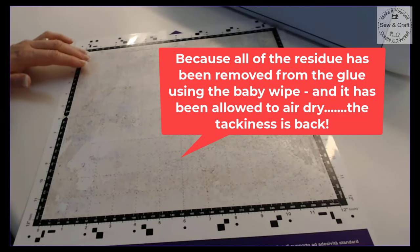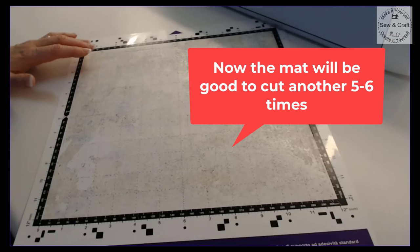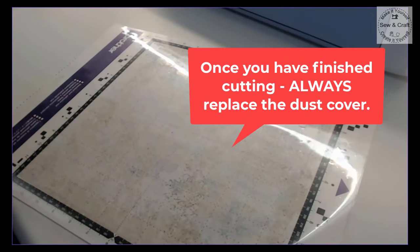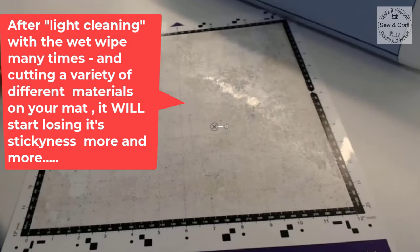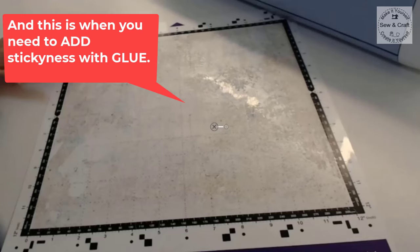Because all of the residue has been removed from the glue using that baby wipe and it has been allowed to air dry, the tackiness will be back. The mat will be good to cut for another five or six times. Once you have finished cutting always replace the dust cover before you store your mat. After the light cleaning with the wet wipe many times and cutting a variety of different materials on your mat it will start to lose its stickiness more and more.